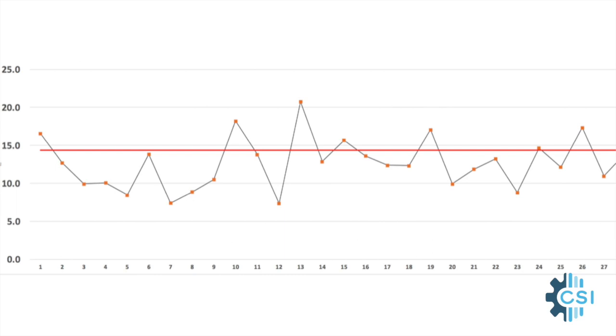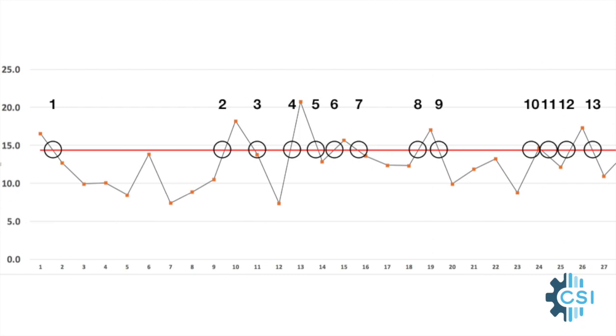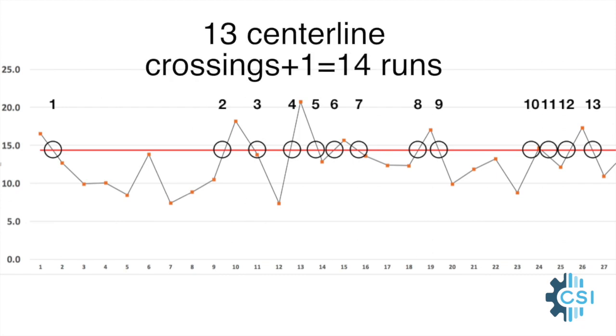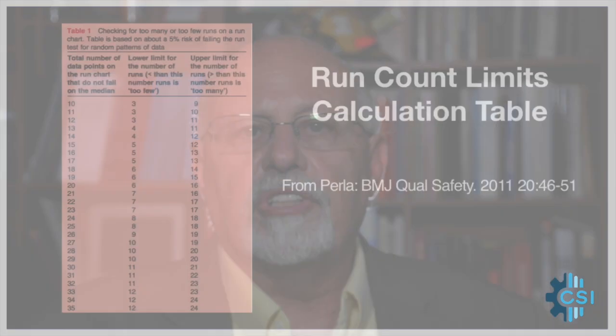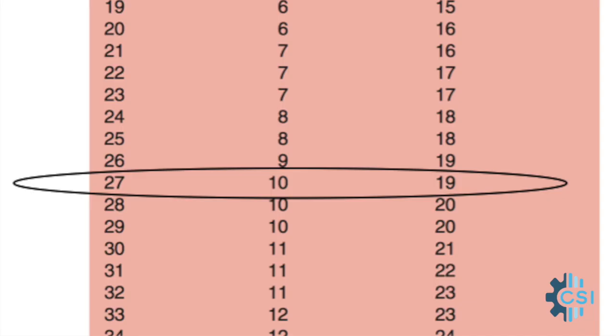On this view of the graph, just consider the section of the run chart on our screen. There are 27 data points. We'll count the number of times the data line crosses the center line — it crossed the center line 13 times, and then we add one, giving us 14 for the number of runs. Now we look at a table of values for the run chart rule for runs. With 27 data points, the table tells us the lowest number of runs expected if variation is random is 10, and the highest is 19. Our count of 14 falls inside those limits, so this section does not seem to have special cause variation, at least on the basis of the run chart rule for runs.